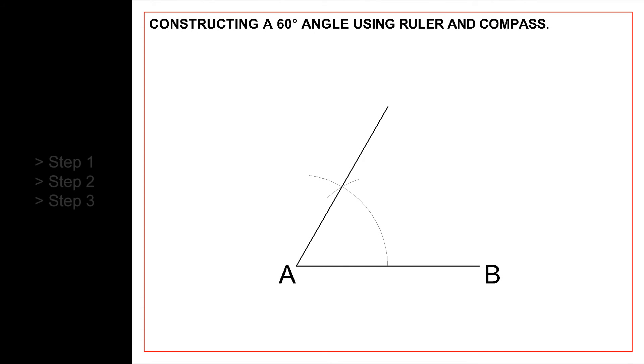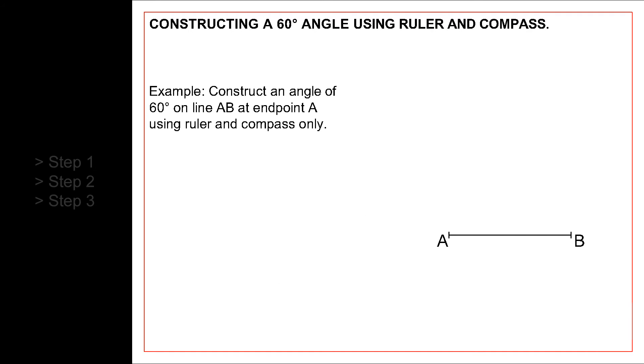Hello everyone, in this video we will learn how to construct an angle of 60 degrees by using ruler and compass only. To illustrate this method, we will construct the 60 degree angle on a given line AB at one of its endpoints A.